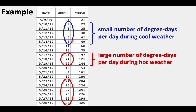In blue, there's a very small number of degree days per day during cool weather. So even though we started on a very warm day on the 9th, from the 10th through the 14th of May that year, the temperatures must have been very cool because we were only getting a few degree days per day. But anything circled in red shows a large number of degree days per day during hot weather — we were racking up as many as 24 degree days in a single day during those periods.